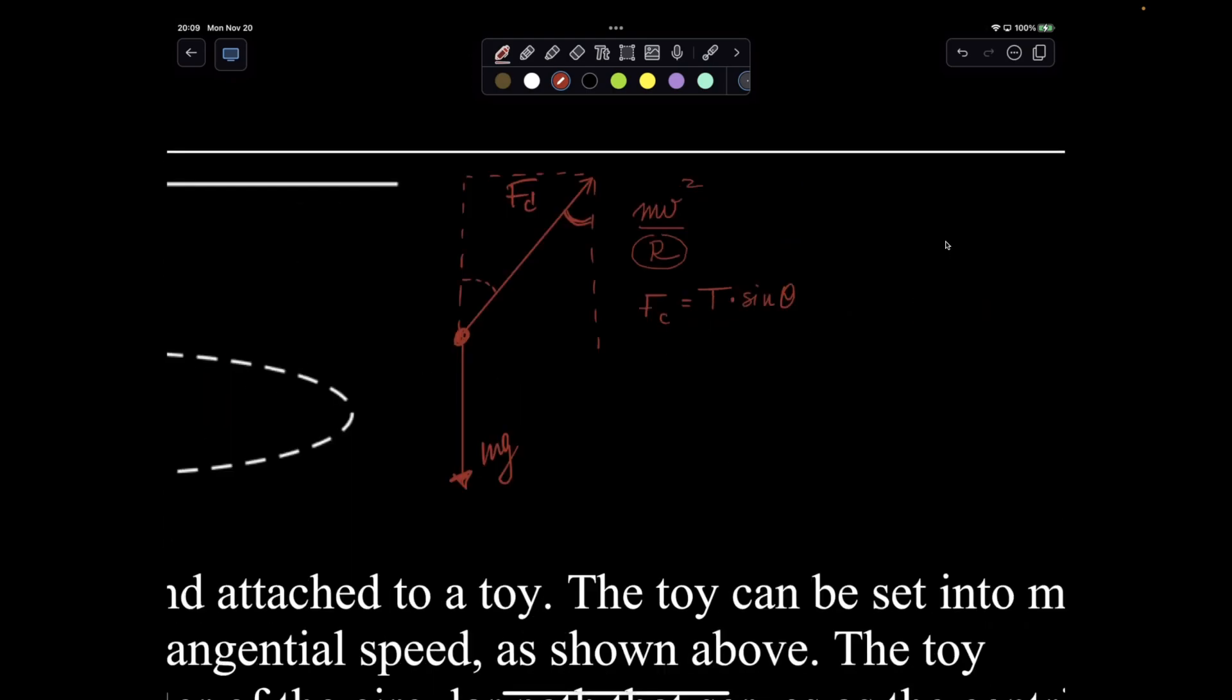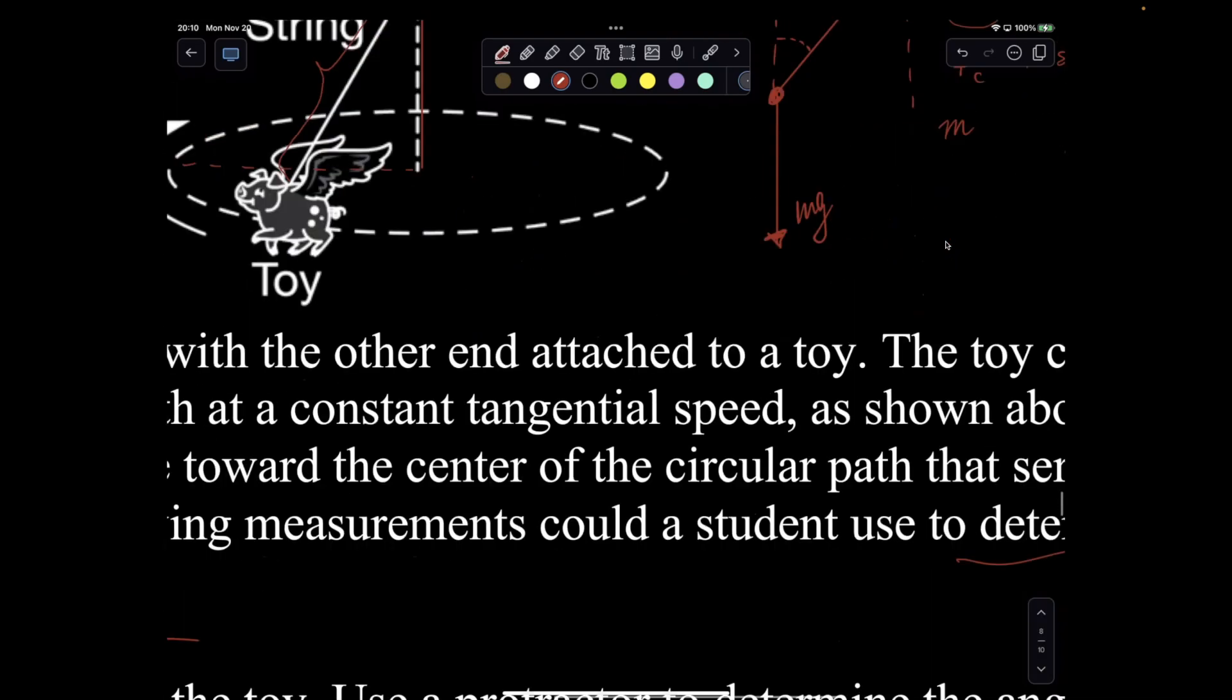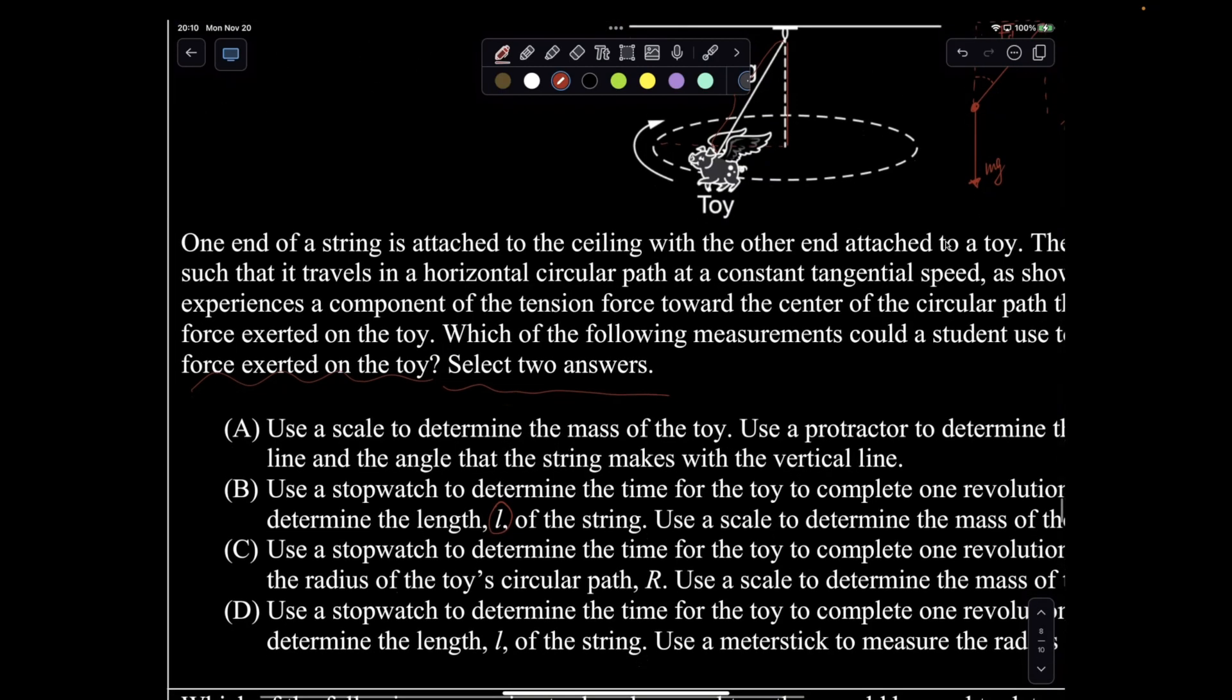If I don't have a force sensor, let's see if I can get r and then period. So I can do just strictly, if I go force centripetal equals mv squared over r, if I measure r and I measure time, so period, then I can figure out the v squared, and then I will have to measure mass. So is there a version? Use the scale. Promising. Mass of the toy, got it.